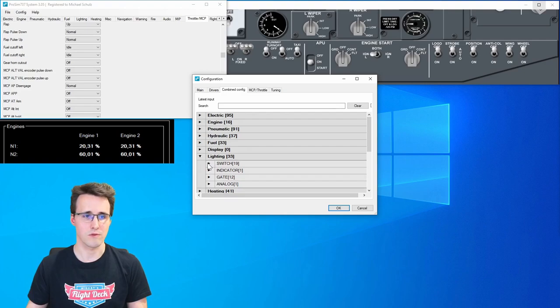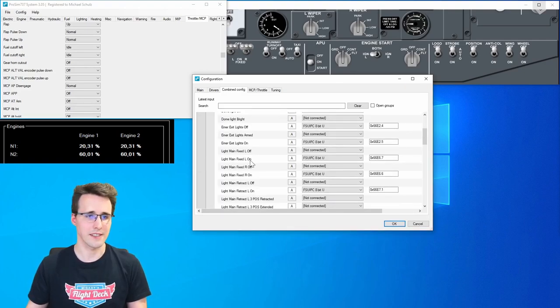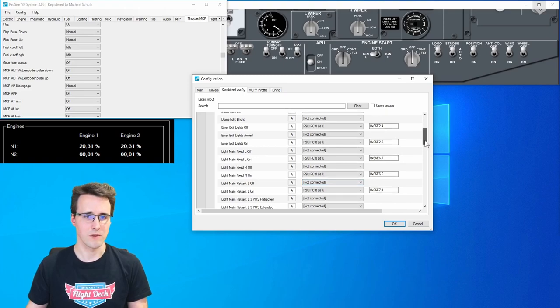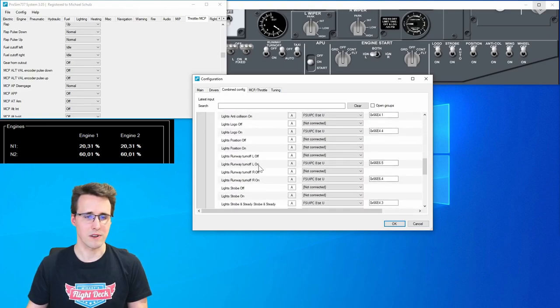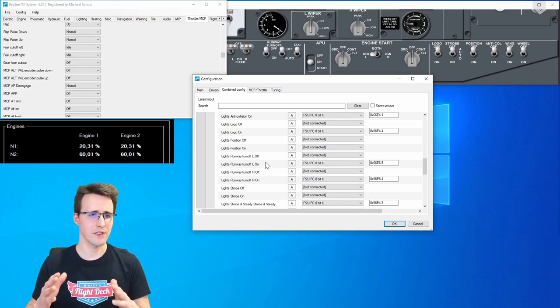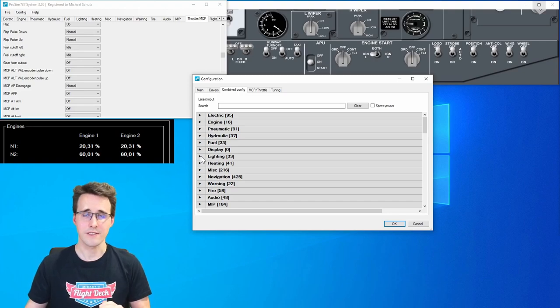Most of the things can be found here in the lighting category. And there under switches. And here you can see most of the configurations I have done. For example here the fixed left and right lights are configured. When you go down you will find more lights. Position lights, runway turn off lights and so on. Everything concerning lights can be found here.